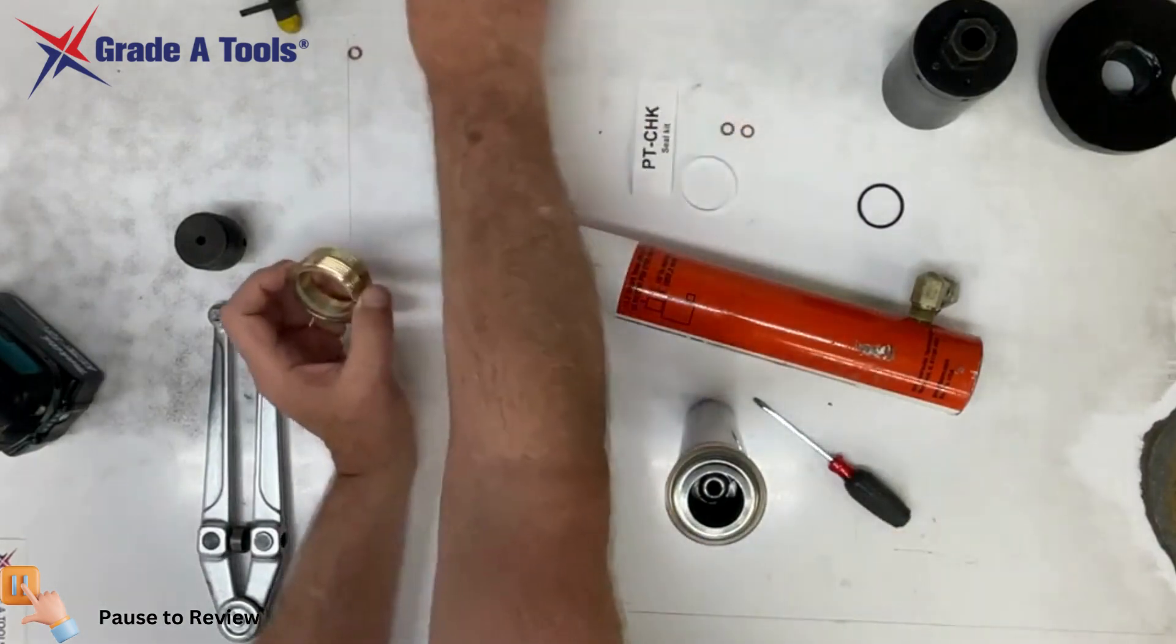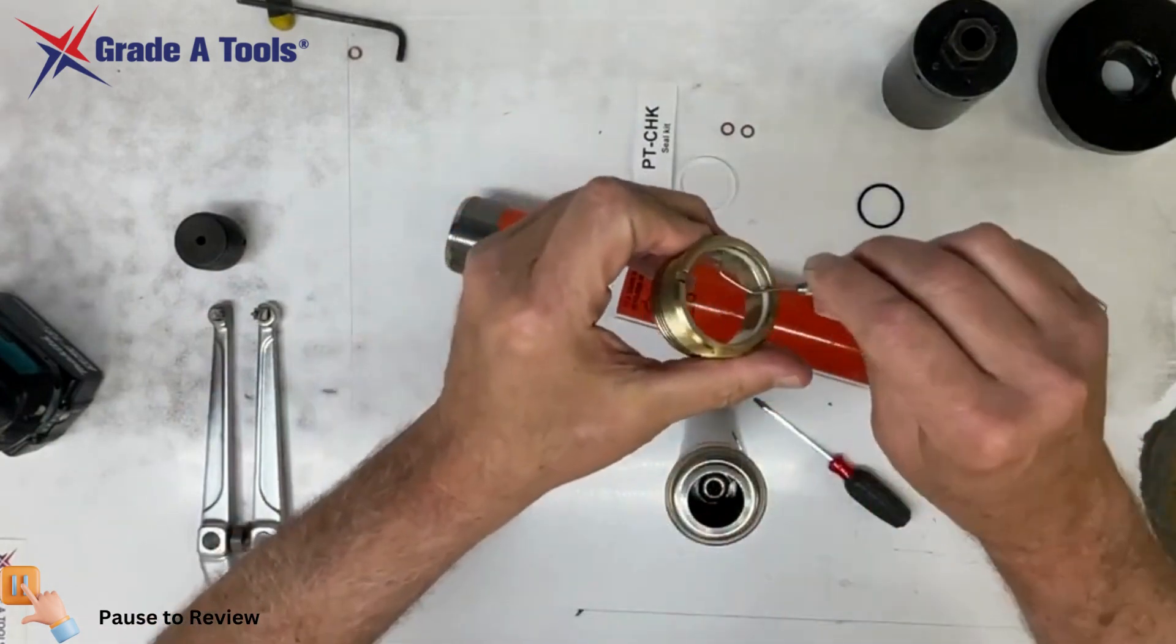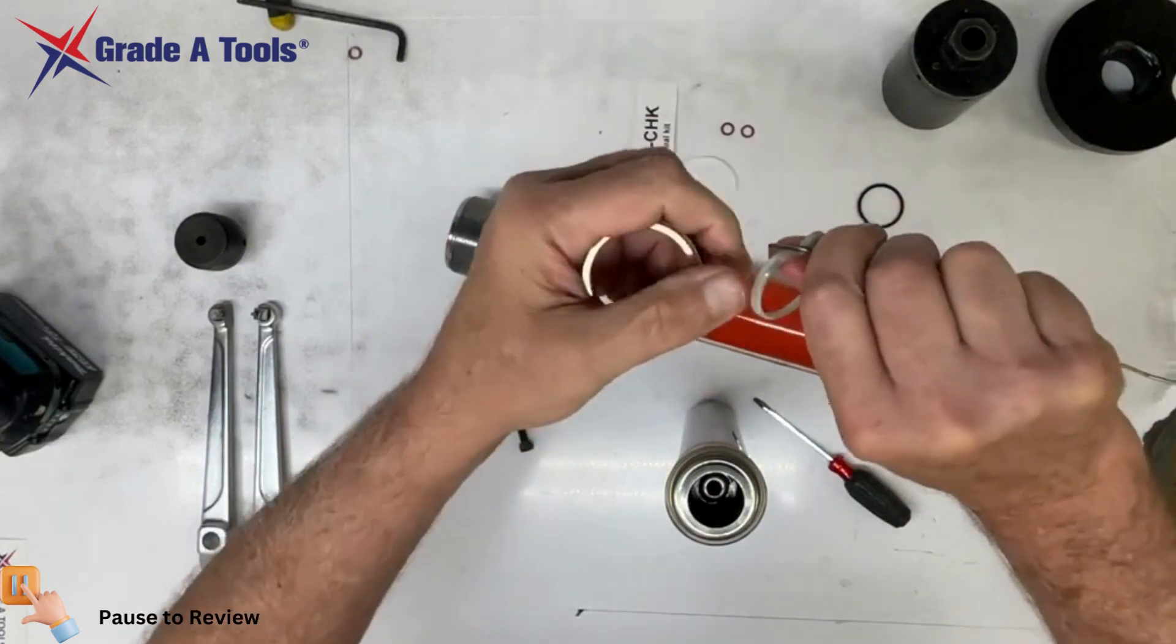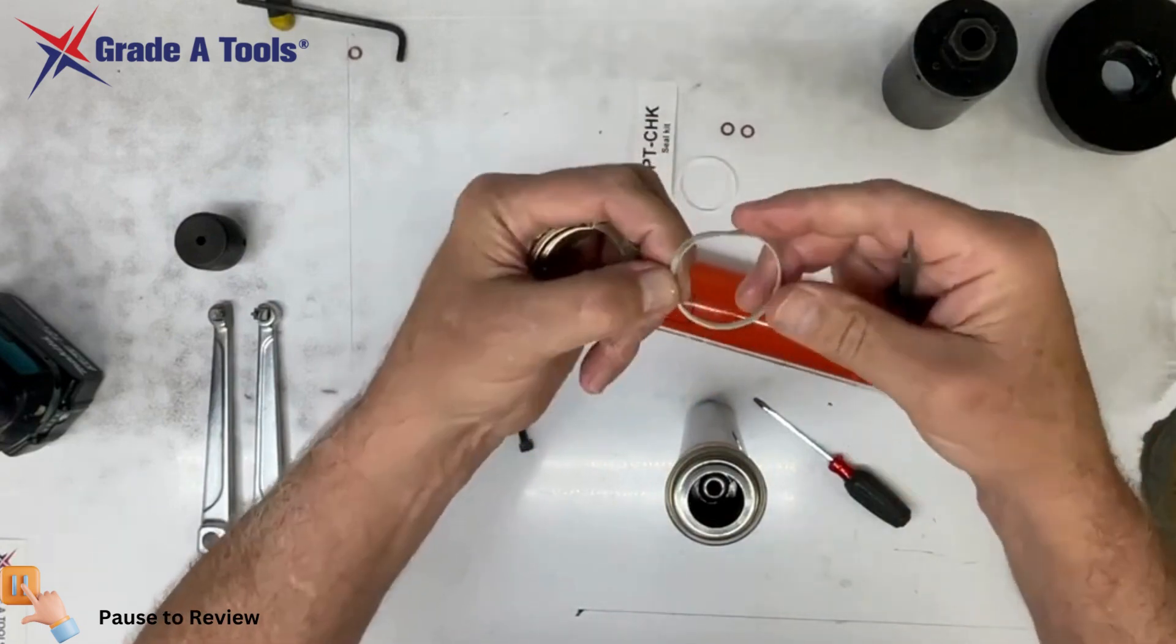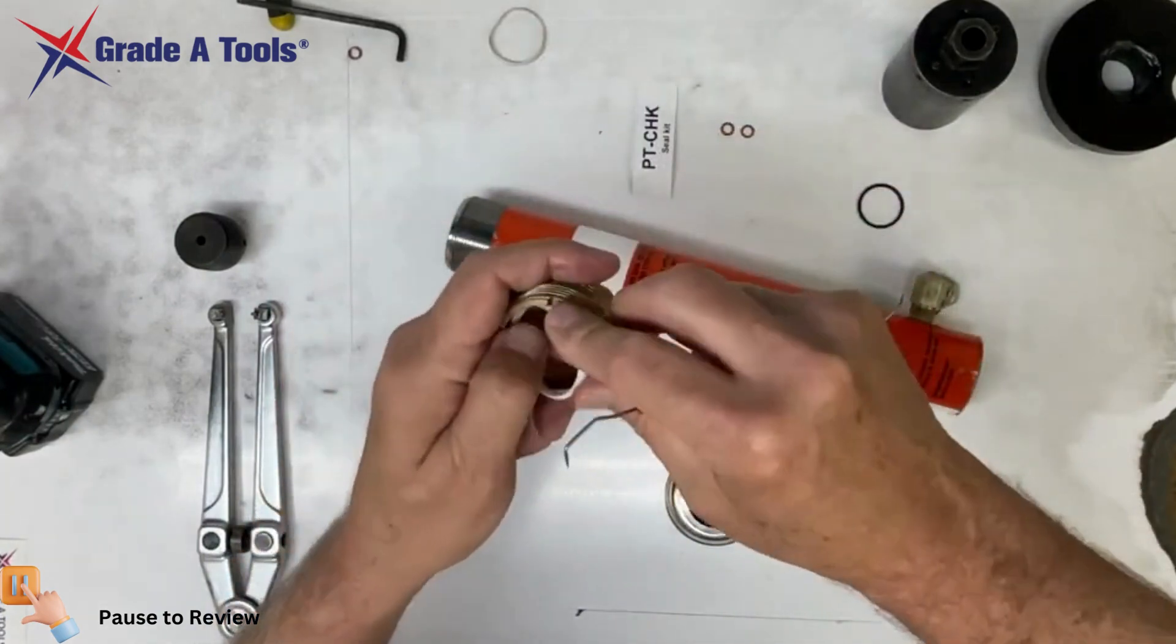Inside here you have your wiper. Your wiper will come off. Pay attention to which way the wiper is in. You'll reverse the process by putting your wiper back in here.